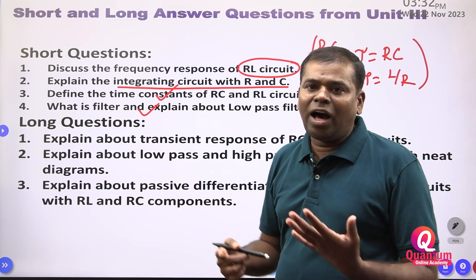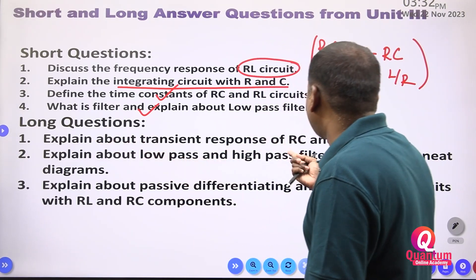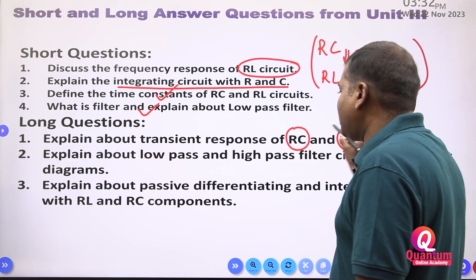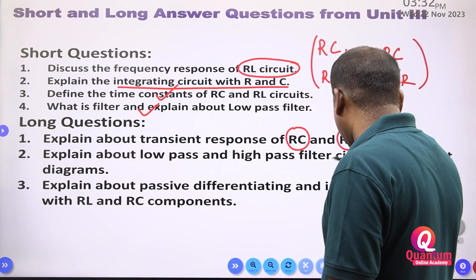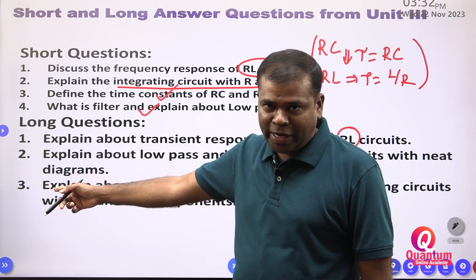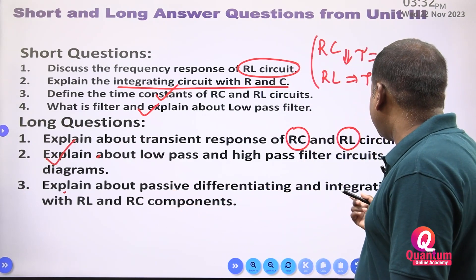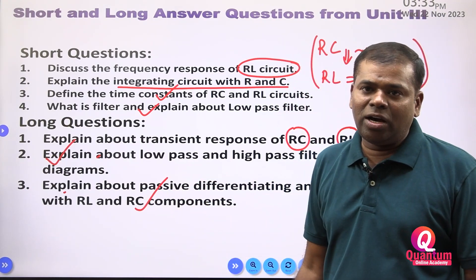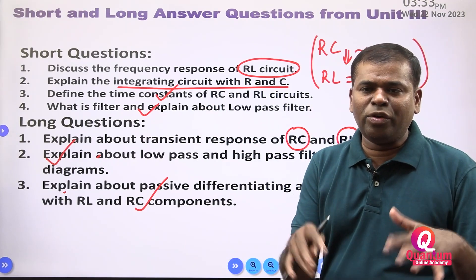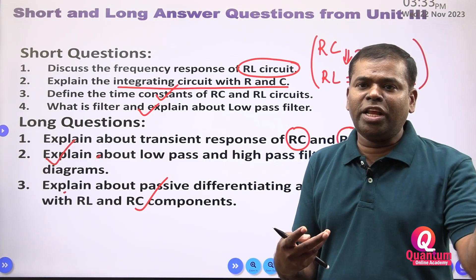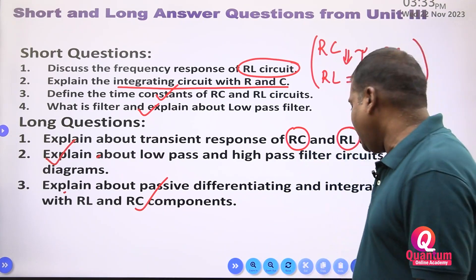The long questions for Unit 3 — there are only three possibilities: explain about the transient response of RC circuit and RL circuit; explain about the low pass filter and high pass filter with a neat circuit diagram (this is also in your laboratory); explain about passive differentiating and passive integrating circuits. Only three questions are there in that unit, so if you read these three questions — whether short, long, or problem-based — you can answer anything.